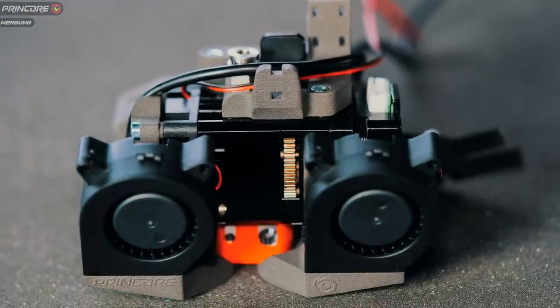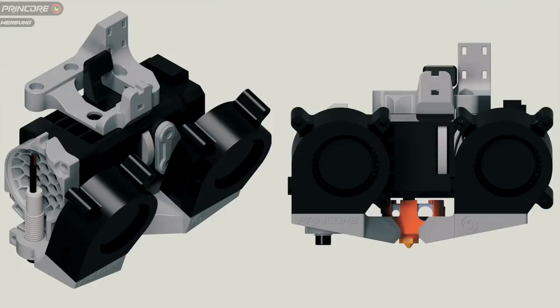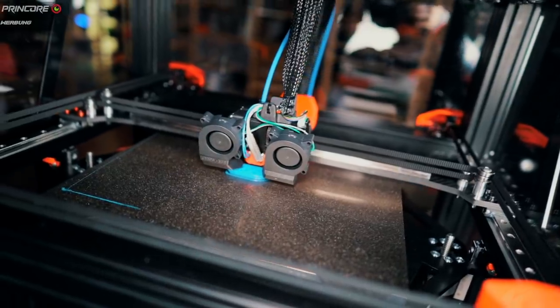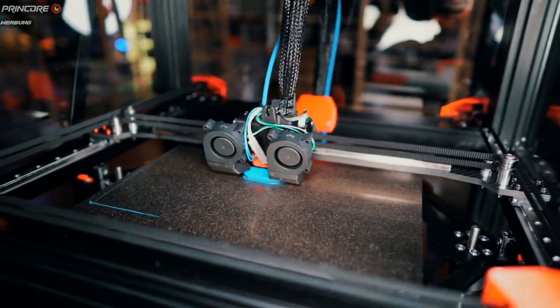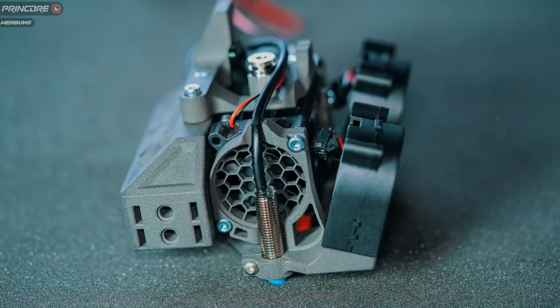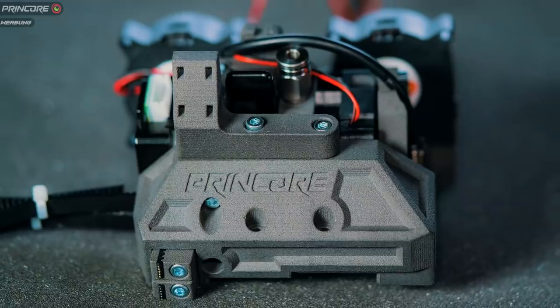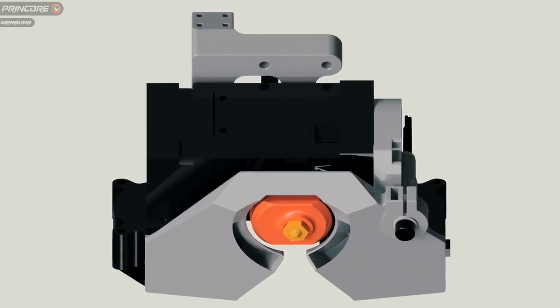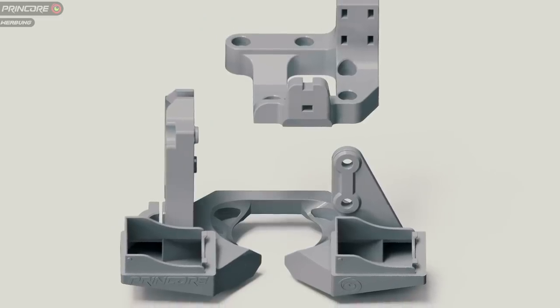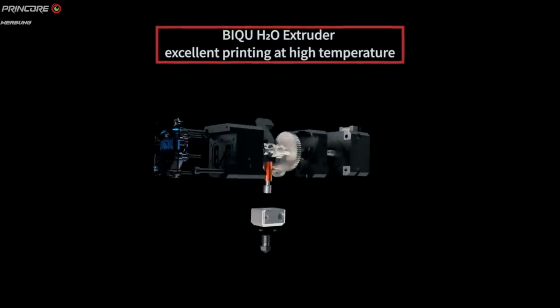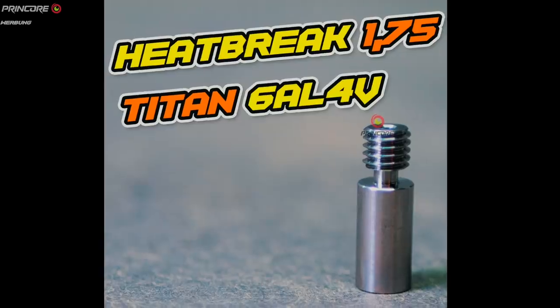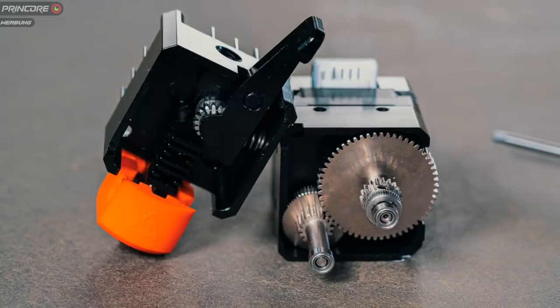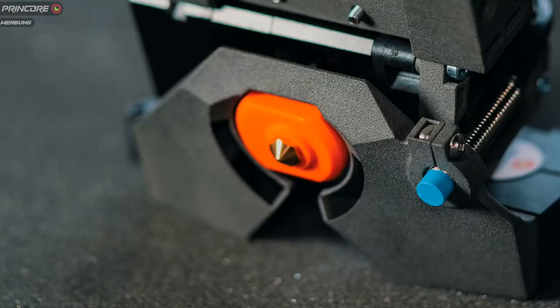Als Extruder kommt der meiner Meinung nach momentan zuverlässigste Direktextruder zum Einsatz, der BigTreeTech BQH2. Dieser verbindet die Vorzüge eines Direktextruders, beispielsweise die verringerten Rückzugswerte oder das vereinfachte Verarbeiten von flexiblen Filamenten mit einem sehr kompakten Design und hochwertig gefertigten und verbauten Komponenten. Zusätzlich besteht die Möglichkeit, in Zukunft die wassergekühlte Version, den BQH2O, ohne viele Umbaumaßnahmen nachzurüsten. Sämtliche Komponenten hierfür liegen bereits in meiner Schublade. Im Extruder selbst ist bereits ein Heatbreak aus Titan verbaut, welches ein problemloses Verarbeiten von PLA bis hin zu PC ermöglicht und die Wartungsintervalle deutlich streckt.